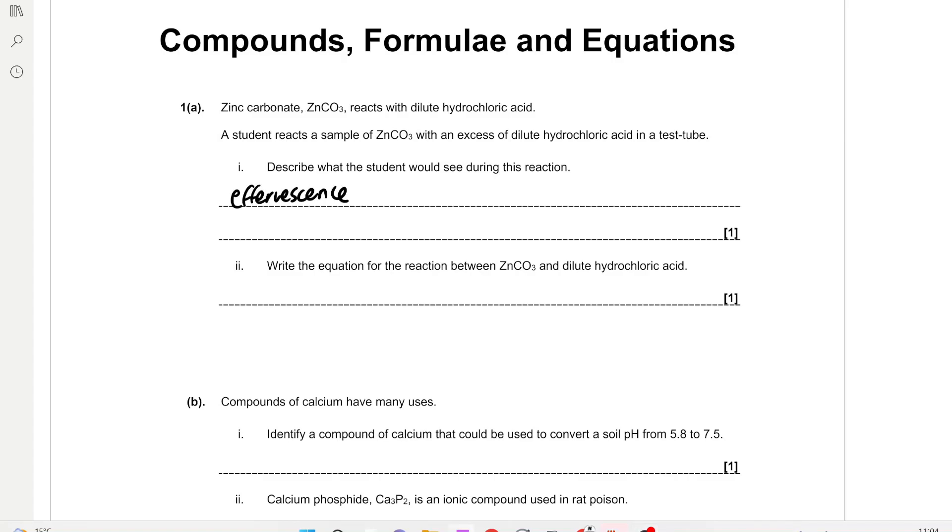As CO2 gas is formed, write the equation for the reaction between zinc carbonate and dilute hydrochloric acid. So when a carbonate and an acid react, they form a salt which is the product of a reaction in which H plus ions are replaced by metal or ammonium ions. They form CO2 gas and they also form water which is obviously a liquid. So the salt is going to be zinc chloride because the zinc ions are going to replace the H plus ions. And then we're going to form CO2 gas and water.